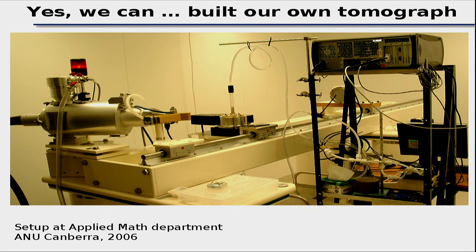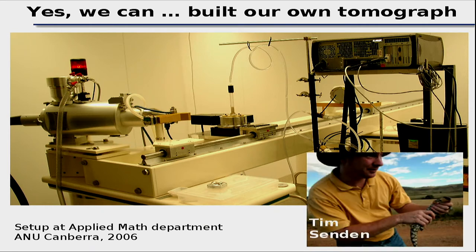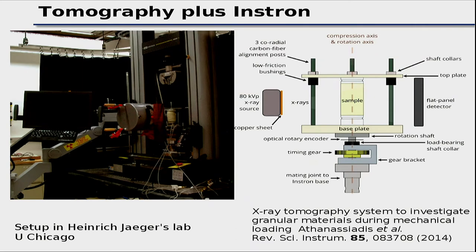Second option: build your own tomography setup. An example from Heinrich Jaeger's lab at the University of Chicago: an extraordinary undergraduate built a complete X-ray setup including an Instron-like compression stage, and published a detailed Review of Scientific Instruments paper covering all the ins and outs. A dental X-ray source (sometimes available second-hand from clinics upgrading their systems) can serve as the X-ray tube; a scintillator screen with a normal CCD camera replaces an expensive flat-panel detector; a rotation stage starts at around $1,000. Total cost can be brought into the ~€50k range.